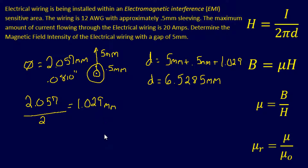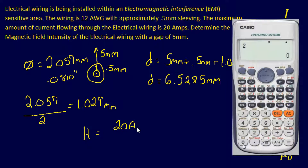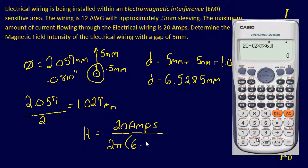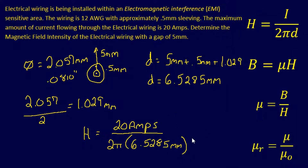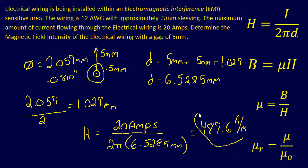Now we find magnetic field intensity: H equals the current divided by 2π times the distance. That's 20 amps over 2π times 6.5285 millimeters. Make sure you keep units in millimeters consistently, otherwise you'll get a different answer. Plugging this into the calculator gives a final answer of 487.6 amps per meter.